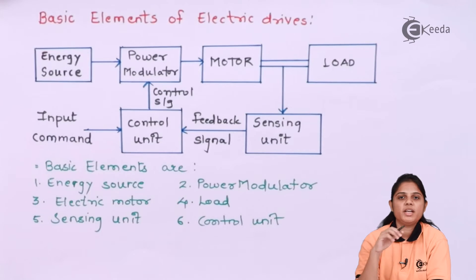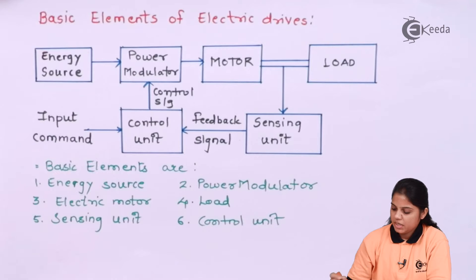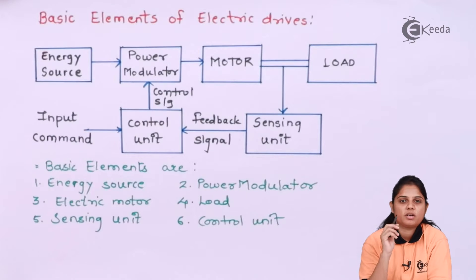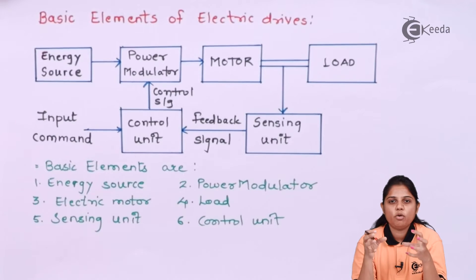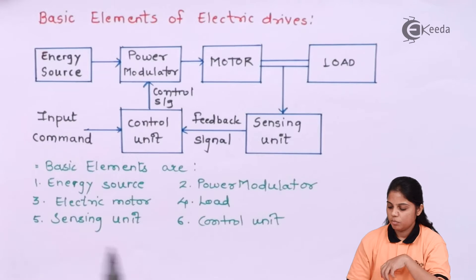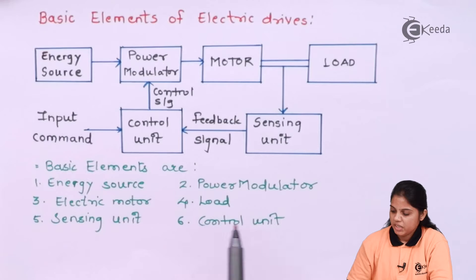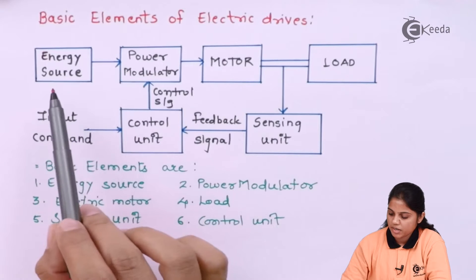The power modulation can be done on the basis of feedback provided to that particular model. Then we have the electric motor — the actual motor which is going to drive your load. Motor and load are connected, and the motor speed drives the load connected to it. The fourth element is the load. We also have a sensing unit and a control unit. Let us see the block diagram.